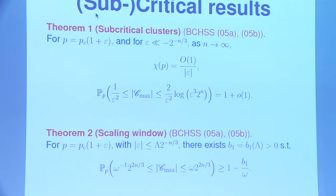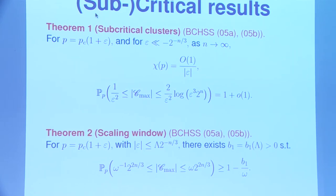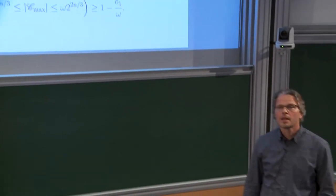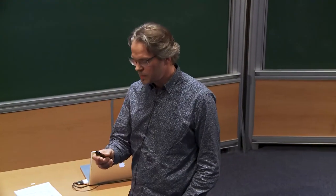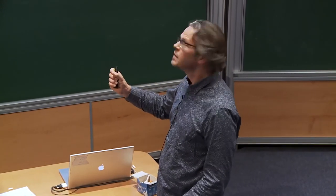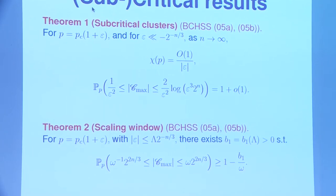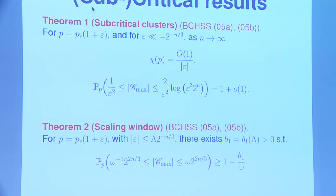Within the critical window — where ε is of order 2^{−n/3} — the maximum component size is 2^{2n/3}, both in terms of lower and upper bounds. This matches the Erdős-Rényi random graph, where 2^{−n/3} plays the role of 1/n^{1/3} for the complete graph. The statement is a tightness result: C_max multiplied by 2^{−2n/3} is a tight sequence of random variables.